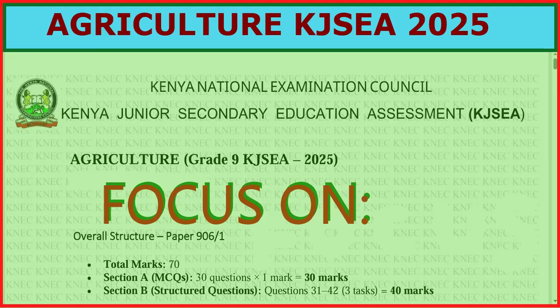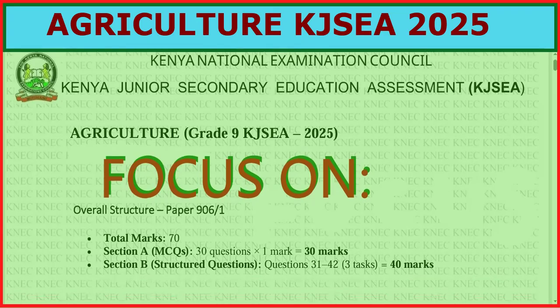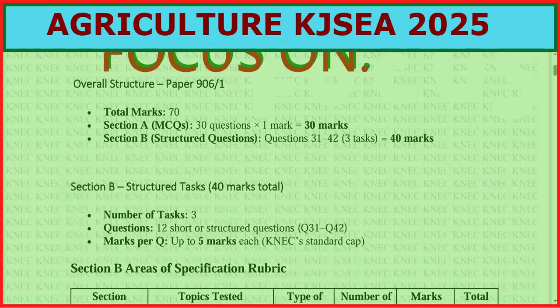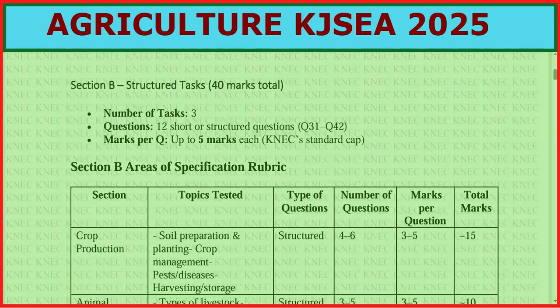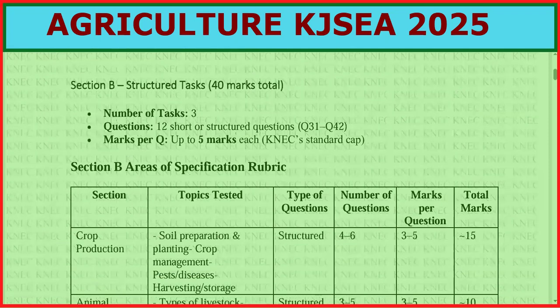In Section B, structured questions total 40 marks. There are only three tasks but 12 short or structured questions ranging from question 31 to number 42 as stated, with marks per question up to five marks.